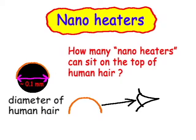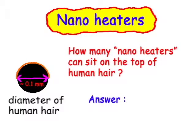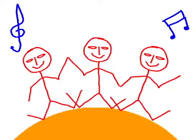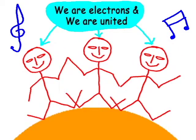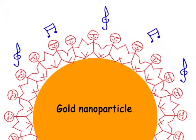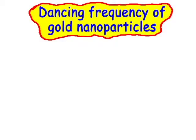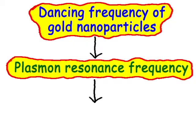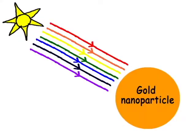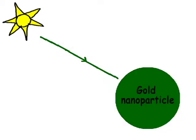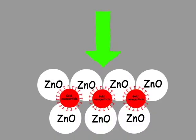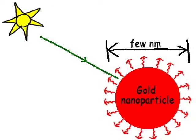We are introducing nano-heaters to increase the temperature of zinc oxide. Nano-heaters are tiny particles that can't be seen with the naked eye. Gold nanoparticles are our nano-heaters. Surface electrons of the gold nanoparticles dance together at one frequency. We call that frequency the surface plasmon resonance frequency of the gold nanoparticles.